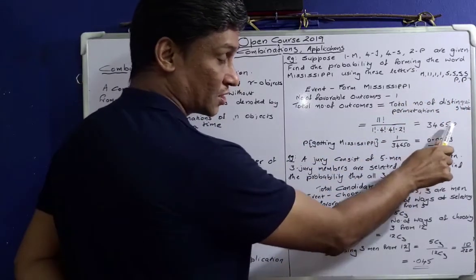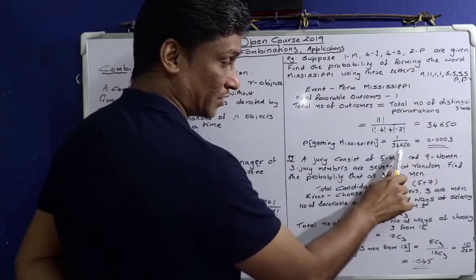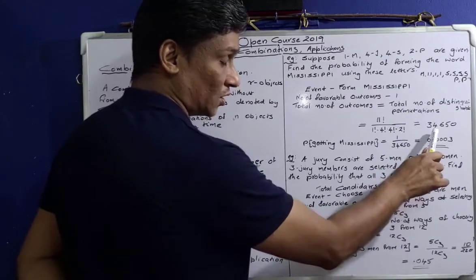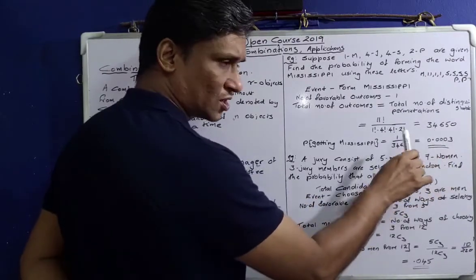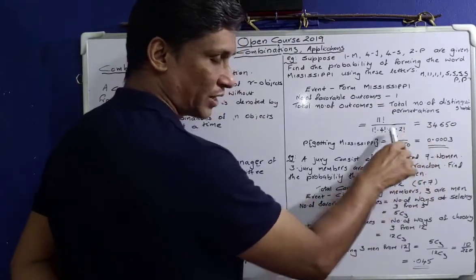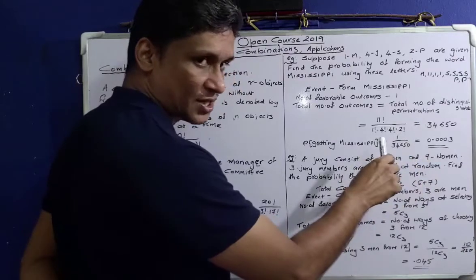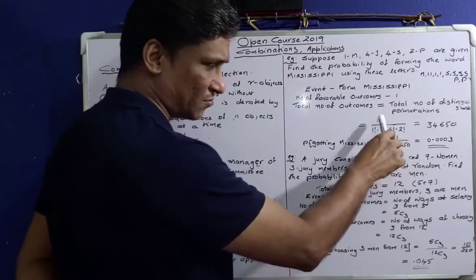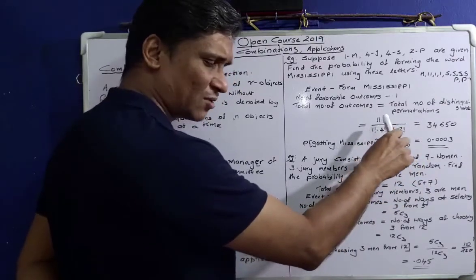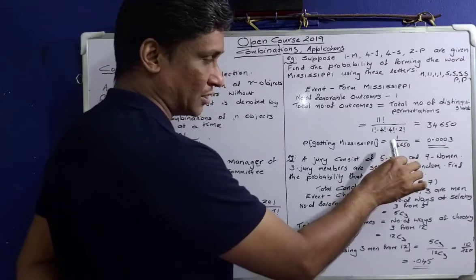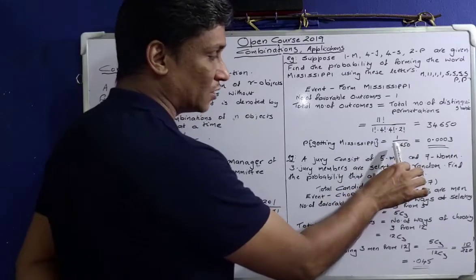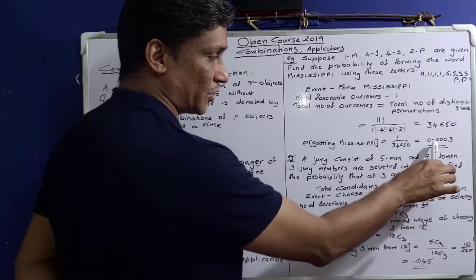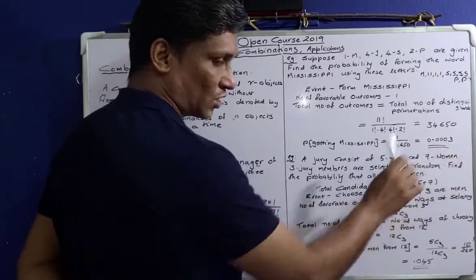That gives 1 divided by 34,650. Using a scientific calculator, 1 divided by 34,650 equals approximately 0.0003. So the probability that the letters spell Mississippi is 0.0003.